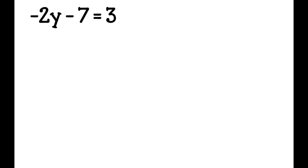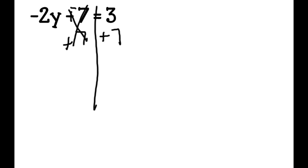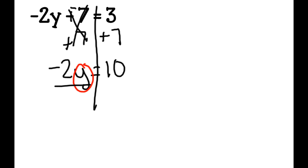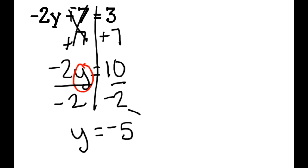-2y - 7 = 3. To get rid of negative 7, I add a positive 7 to both sides. I'm left with -2y = 10. Then to get y by itself, I divide both sides by negative 2 — y equals negative 5. I circle it, and that's my answer.